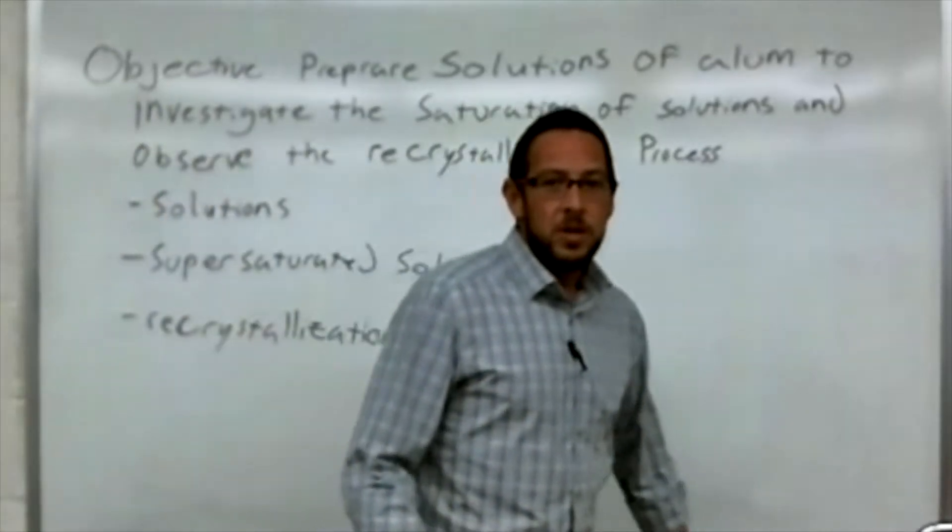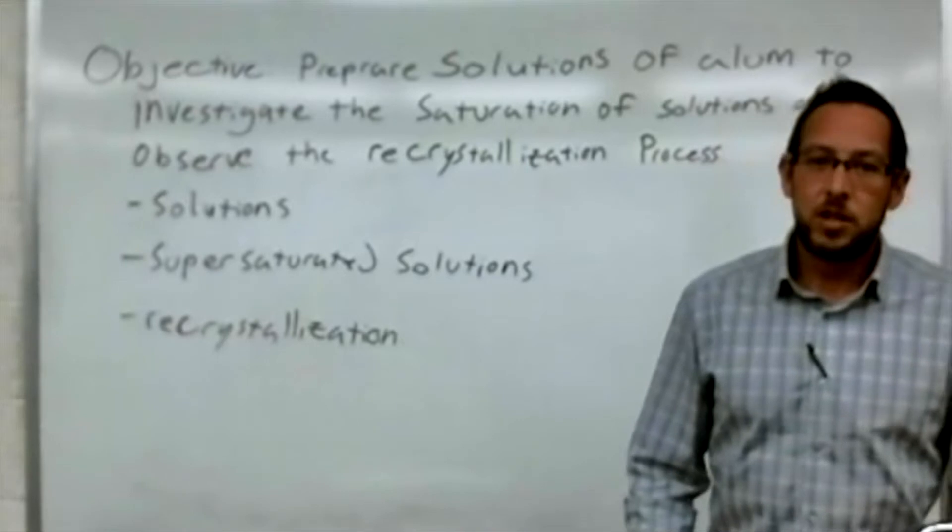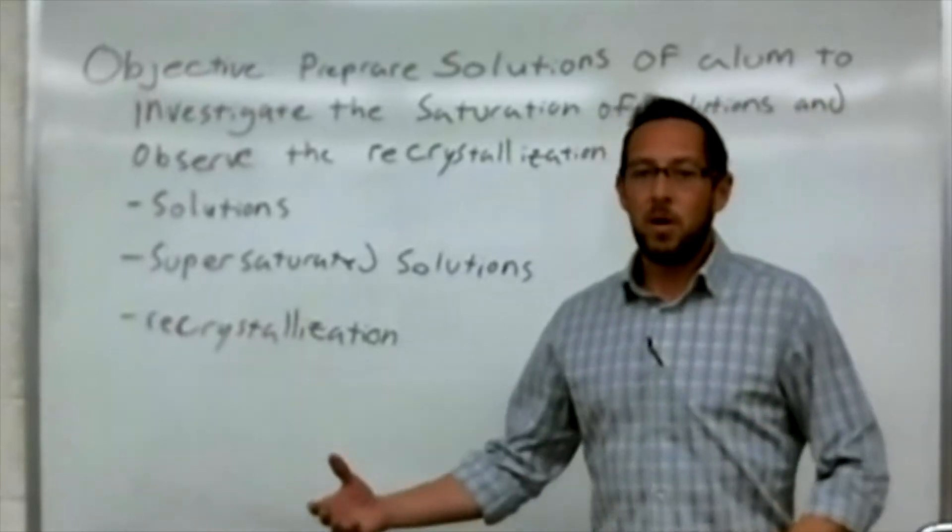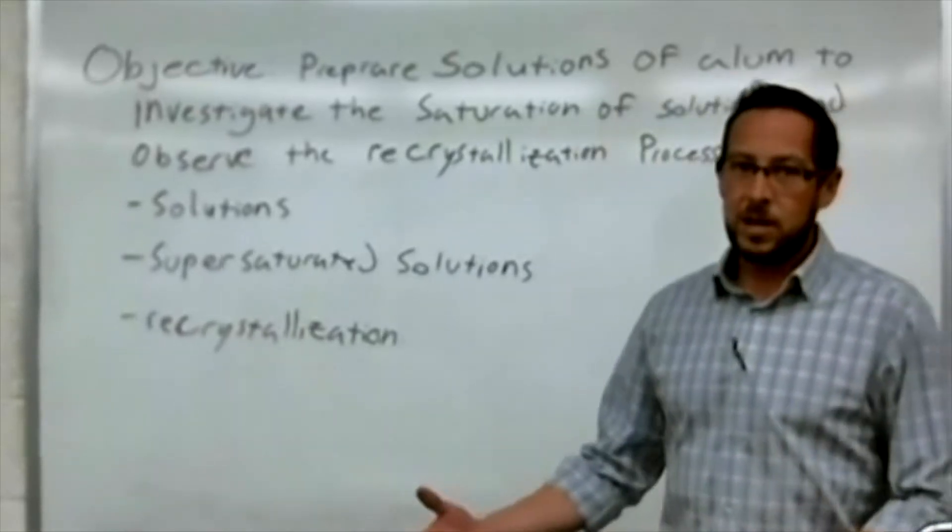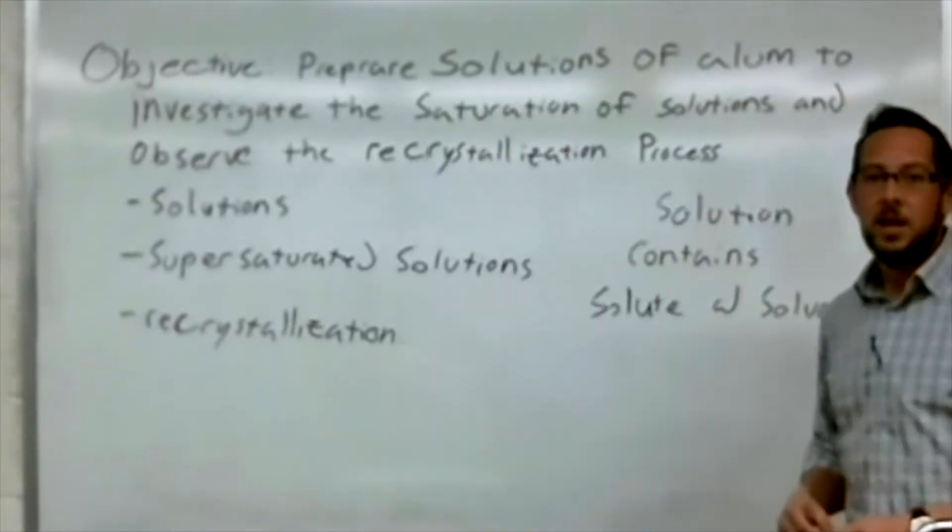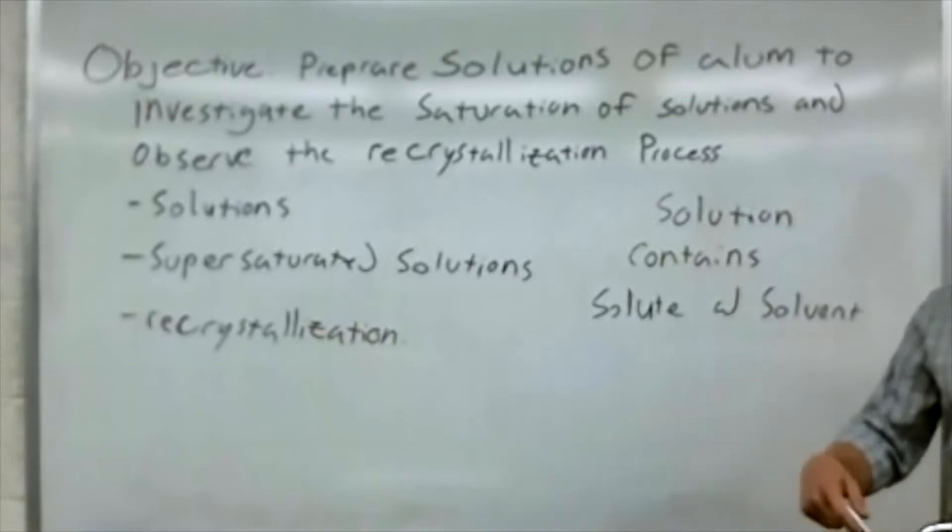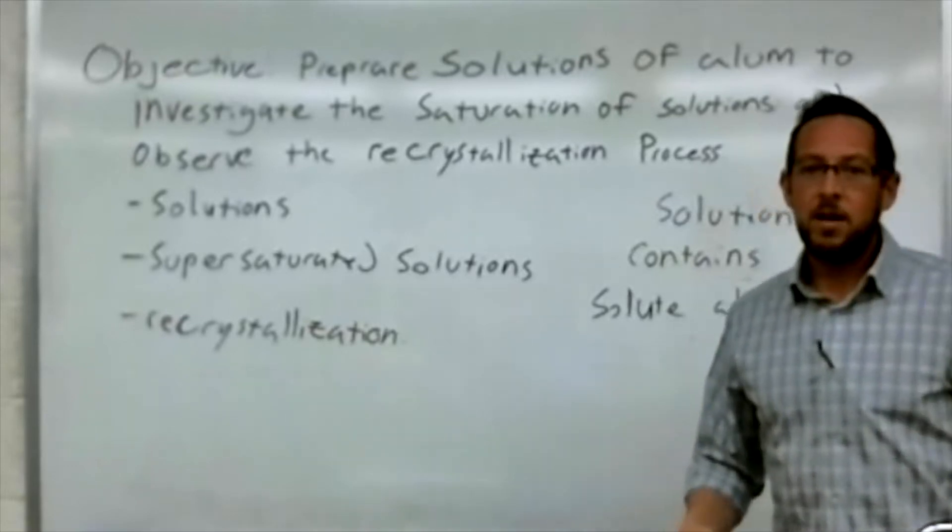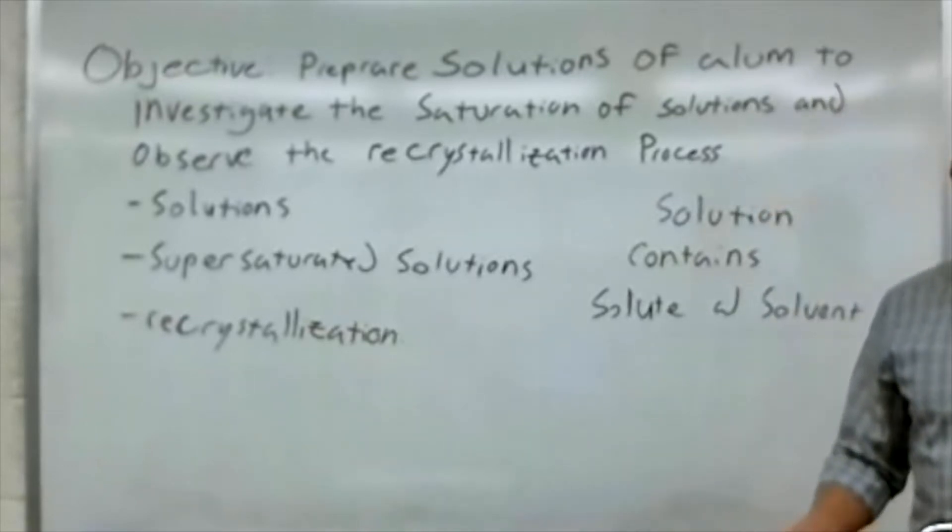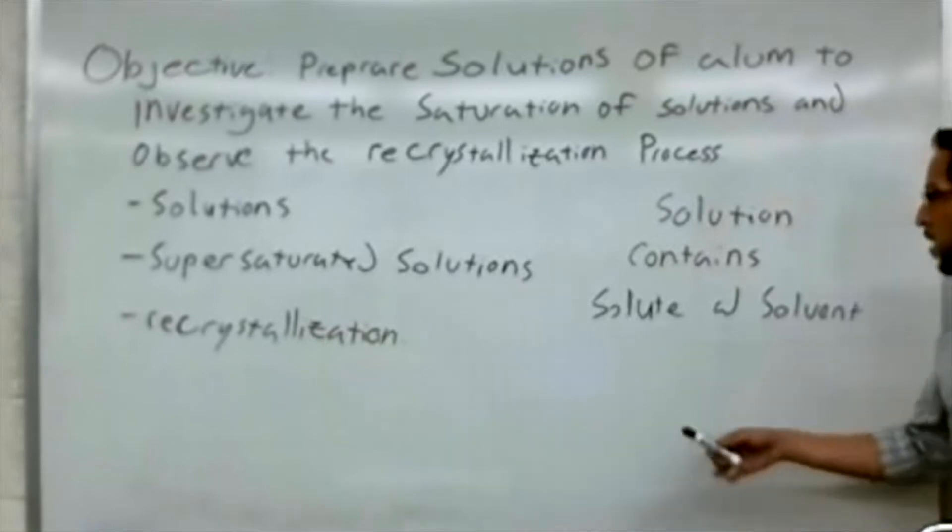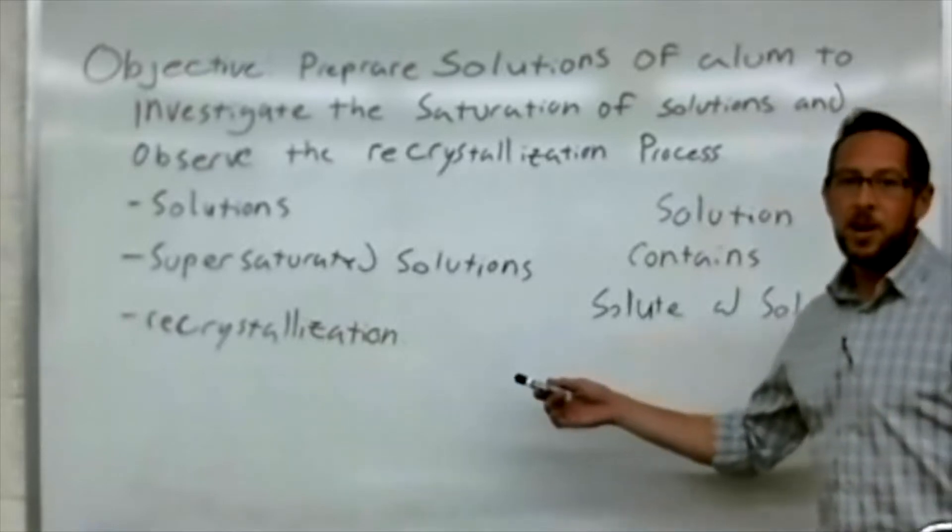So I think first we should start by talking about what is a solution: a mixture of two or more either solids or liquids. So a good example of a solution would be going back to your experiment one, where you dissolve the sugar in water. In this case, the sugar would be considered our solvent, our minor portion.